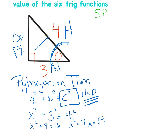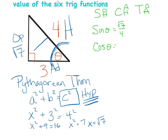Now with all sides labeled, jot down SOH-CAH-TOA and run through the six trig functions. Sine of theta = opposite/hypotenuse = √7/4. Cosine of theta = adjacent/hypotenuse = 3/4. Tangent of theta = opposite/adjacent = √7/3.